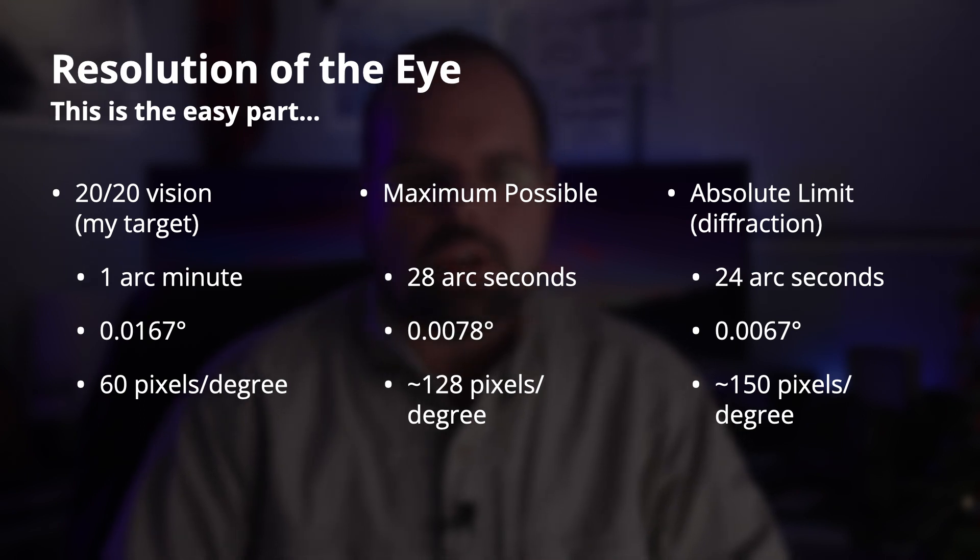The standard I apply for my minimums when talking about resolution is normal vision — some people call it perfect vision, but people have better than perfect vision, so it's not quite perfect. In the US we call this 20/20 vision; in Europe it's 6/6 vision. It means that you can differentiate two items that are one arc minute apart. An arc minute is a 60th of a degree. Translating to pixels, that's a pixel pitch where each pixel is 1/60th of a degree — 60 pixels per degree.